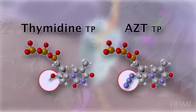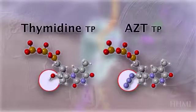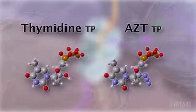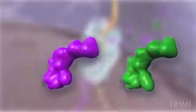Only one part of the molecule is different, and because they are so similar, reverse transcriptase mistakes AZT for thymidine and incorporates it into the DNA chain.